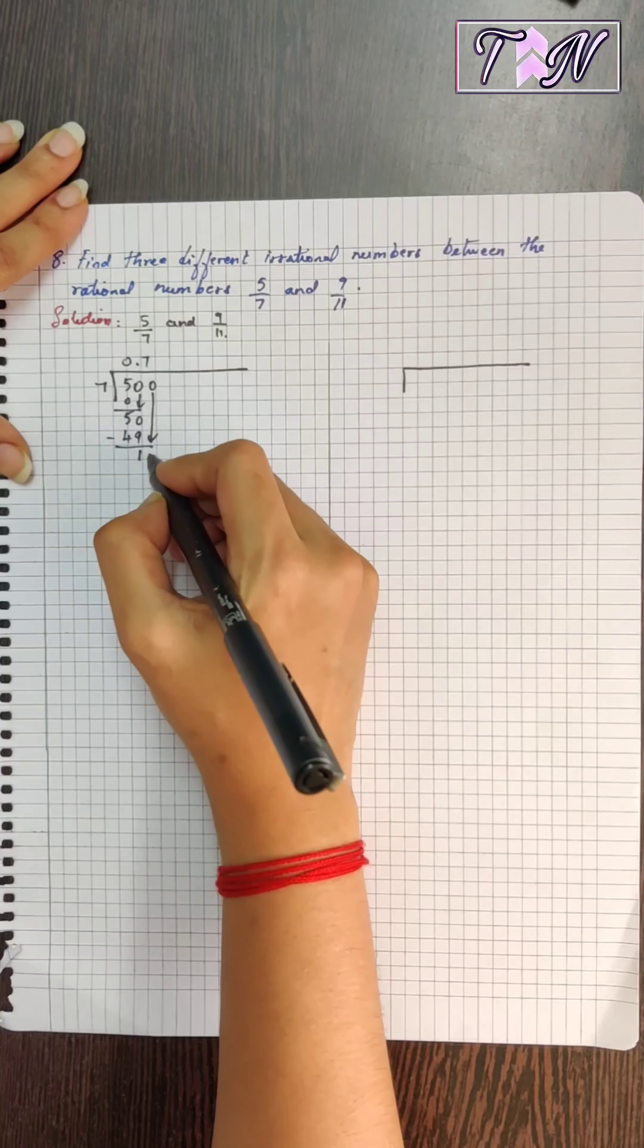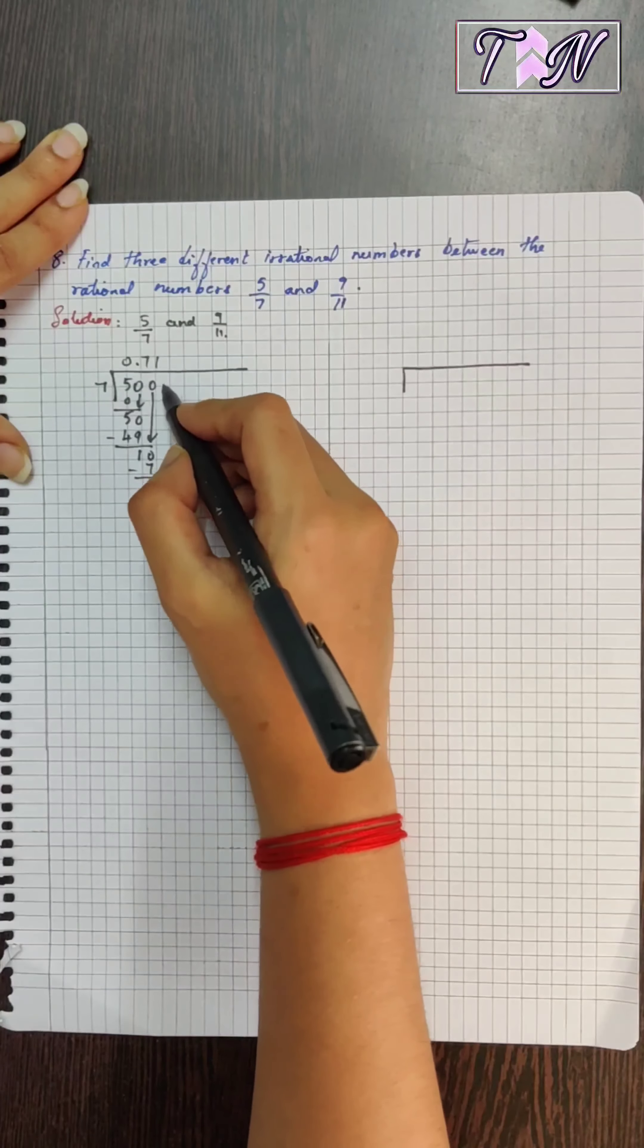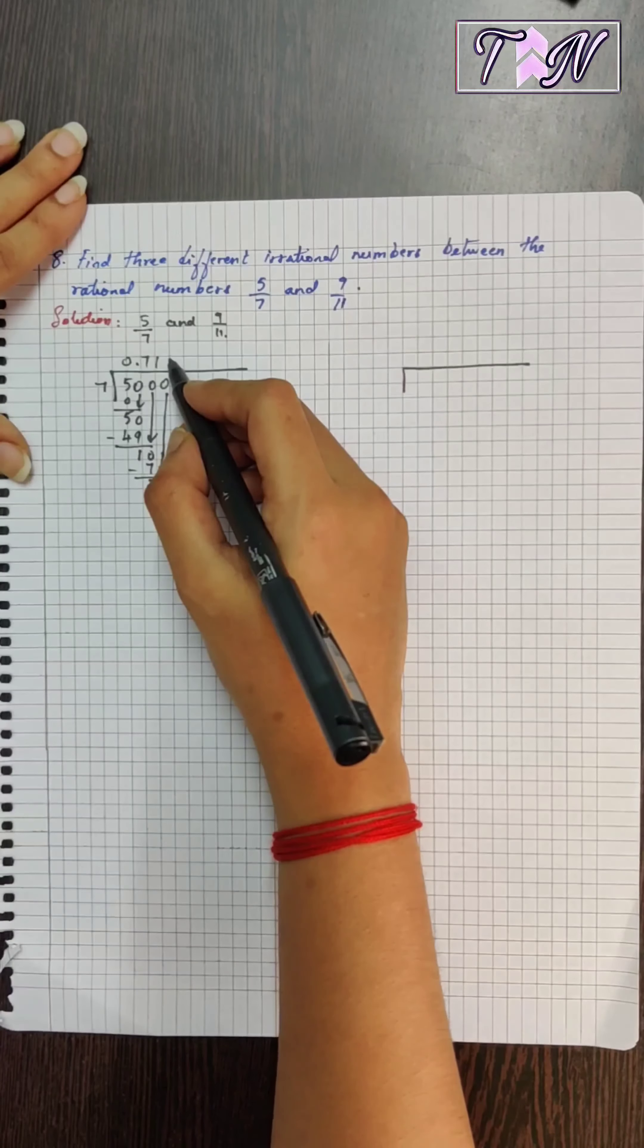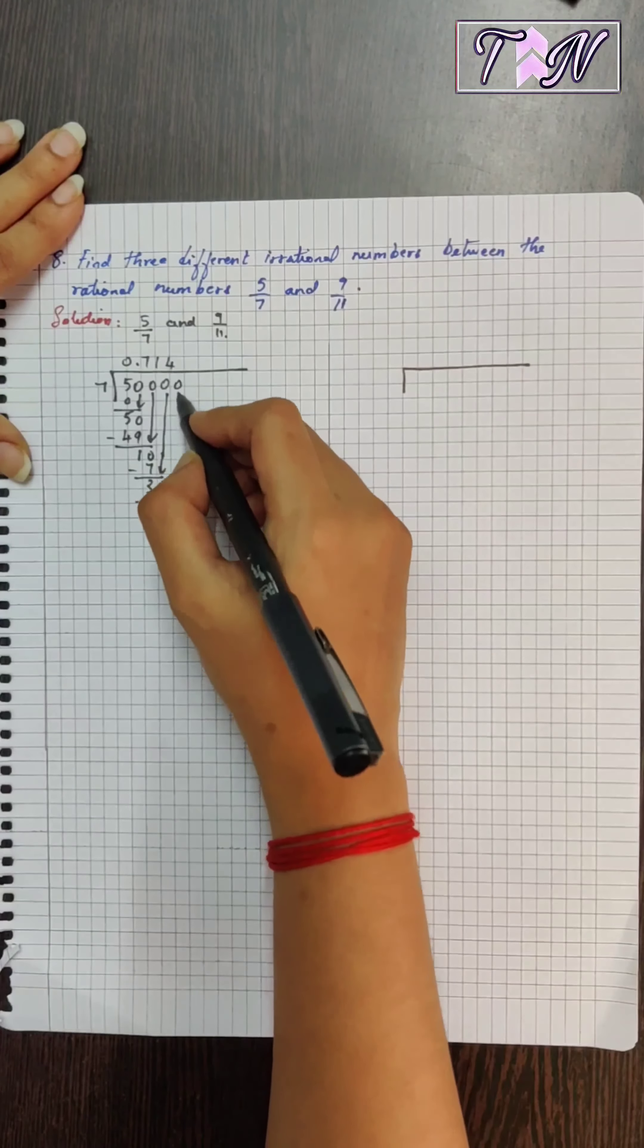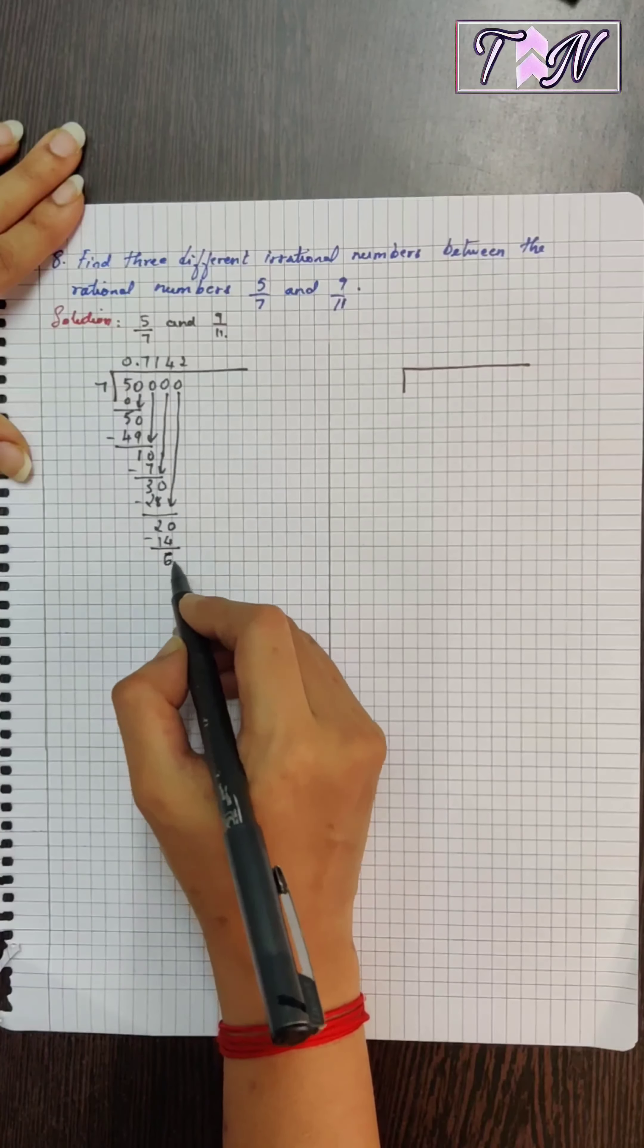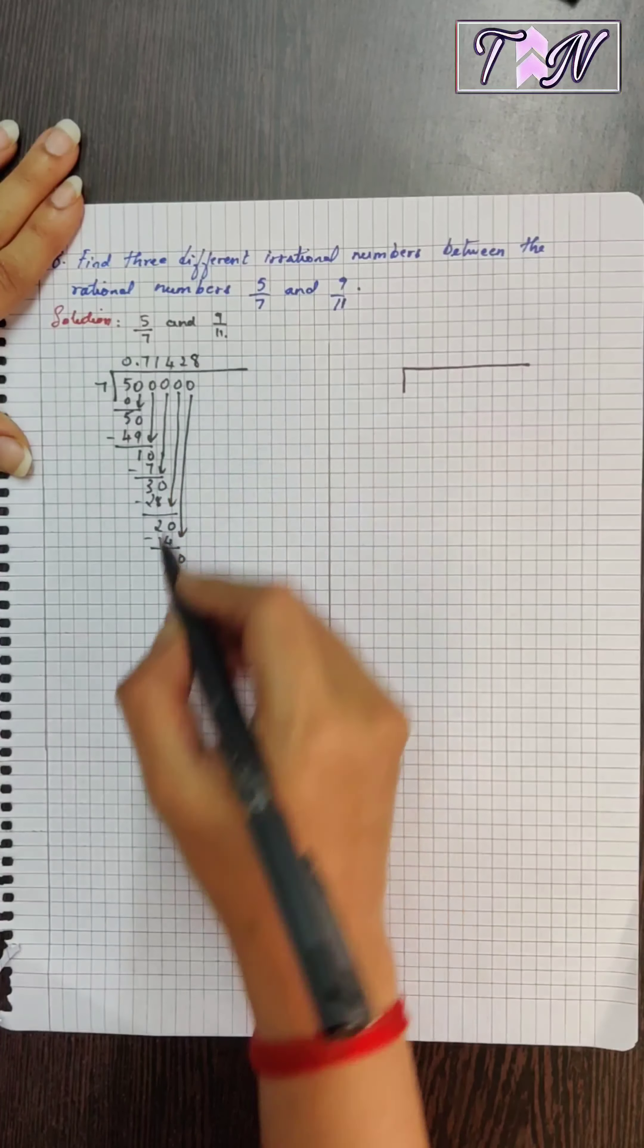I will bring another zero down. Next seven ones are 7, subtract this 3, bring another zero down. So seven fours are 28, subtract this you get 2, bring another zero down. Seven twos are 14, subtract you get 6.